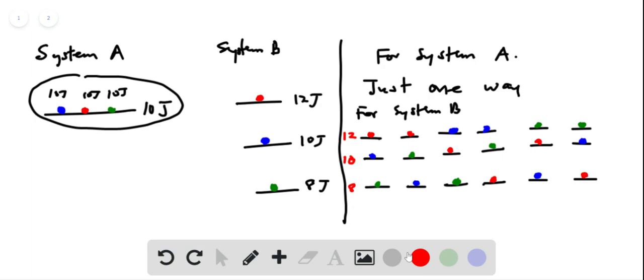So in total we have one, two, three, four, five, six ways. So here we have six microstates. Here we have just one microstate.